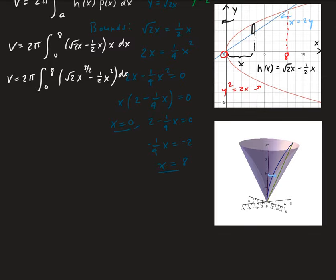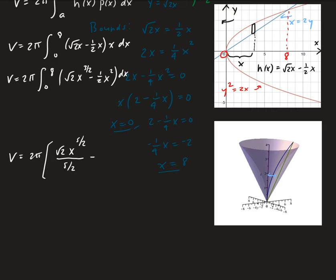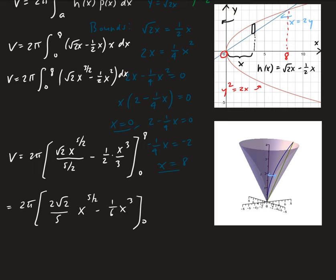Integrating using the power rule: the integral of square root of 2 times x to the three-halves is square root of 2 times x to the five-halves divided by five-halves, and the integral of one-half x squared is one-half times x cubed over 3. Evaluating from 0 to 8, this simplifies to 2 root 2 over 5 times x to the five-halves minus one-sixth x cubed.